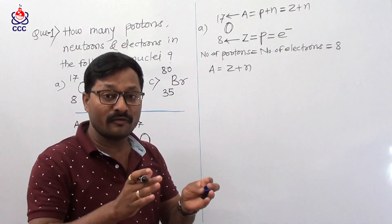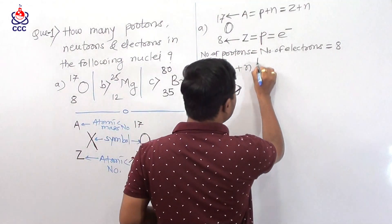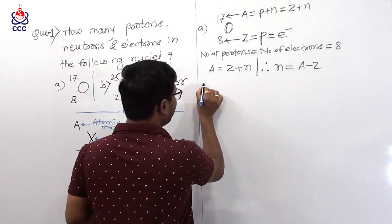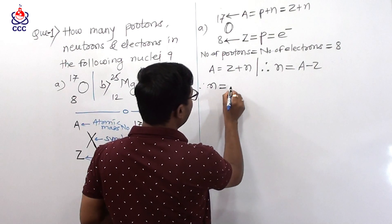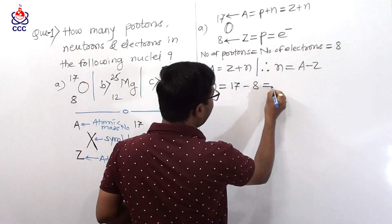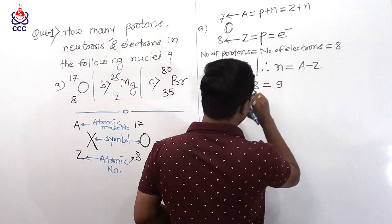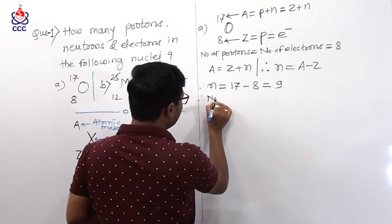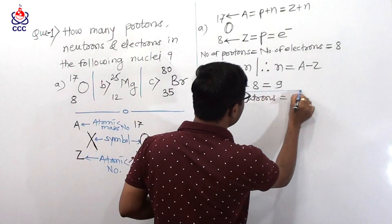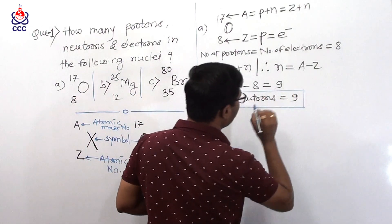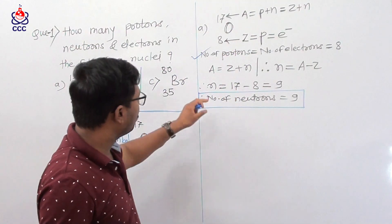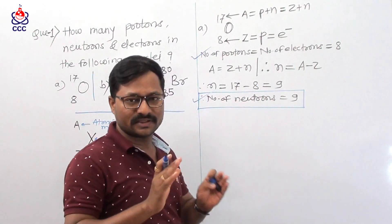We need to find the number of neutrons. From the formula, number of neutrons N is equal to A minus Z. So N equals atomic mass number 17 minus atomic number 8, which gives us 9. Therefore, number of neutrons is equal to 9. We already found the number of protons and number of electrons, which are 8, and the number of neutrons is 9. This completes the first example.